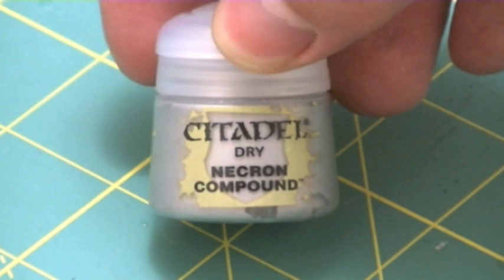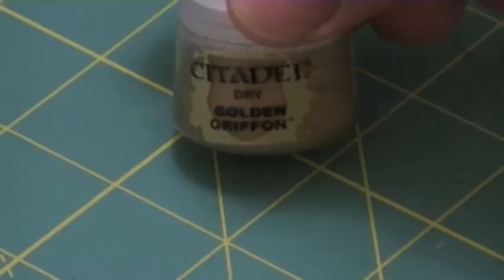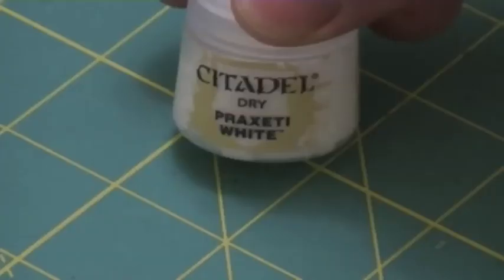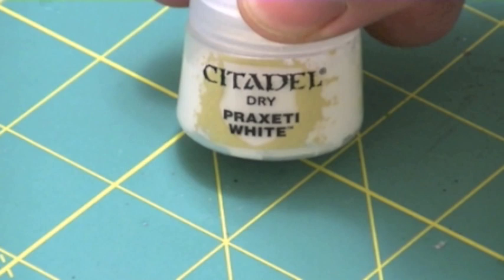Hey everyone, welcome to my review of the new Citadel dry paints, specifically Necron Compound, the new light silver, Golden Griffin, the new kind of old gold dry brush color, and finally Craxetti White, the new white one.